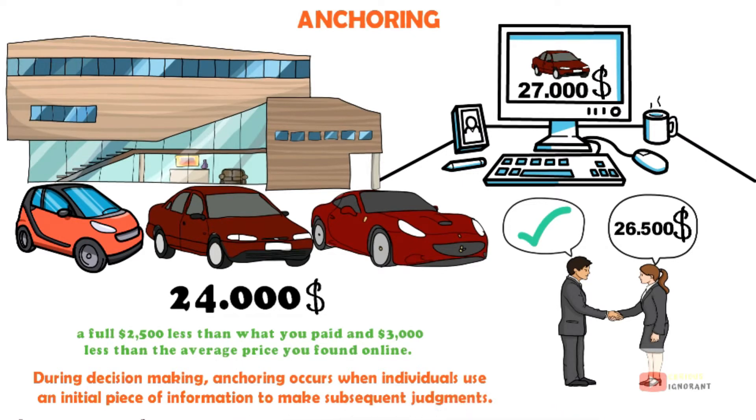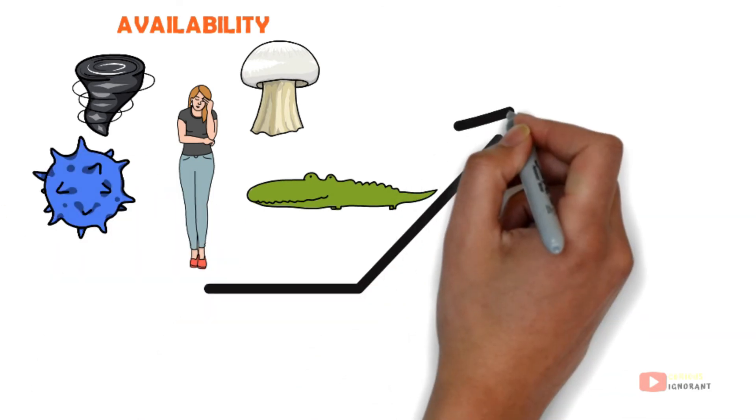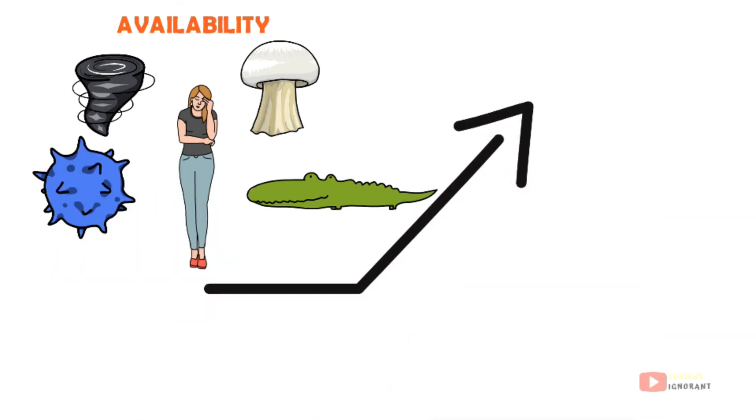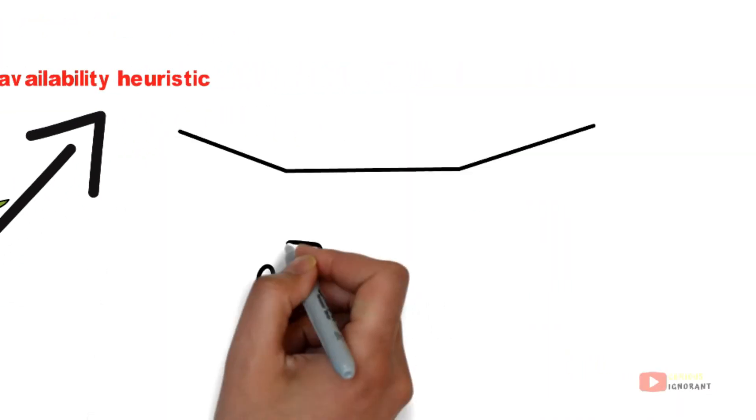Availability. How much should you worry about hurricanes, nuclear power, terrorism, alligator attacks, or mad cow disease? In answering this question of this kind, most people use what is called the availability heuristic. A familiar risk will be seen as more serious than a risk that is less familiar.